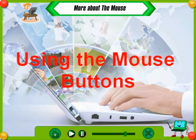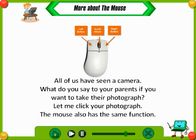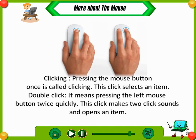Using the mouse buttons. All of us have seen a camera. What do you say to your parents if you want to take their photograph? You say, let me click your photograph. The mouse also has the same function — clicking. Pressing the mouse button once is called clicking, and this click selects an item. Double click means pressing the left mouse button twice quickly; this makes two click sounds and opens an item.